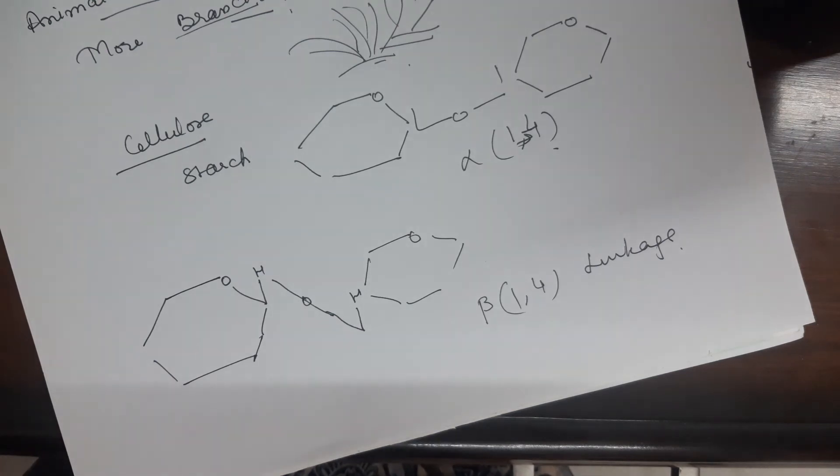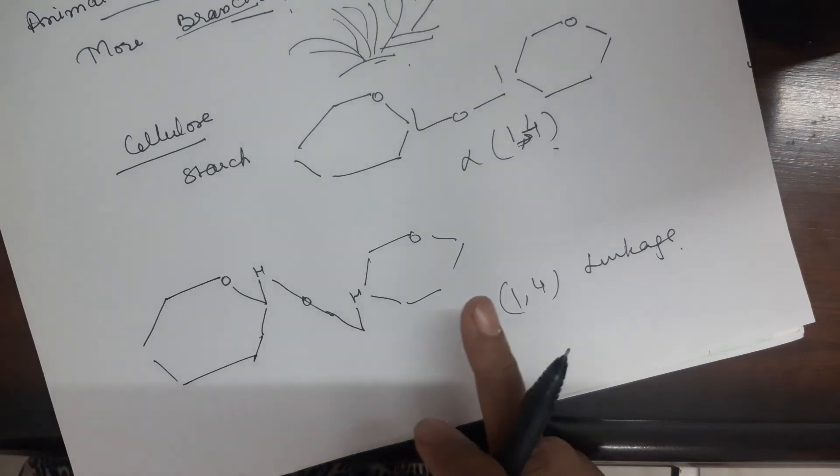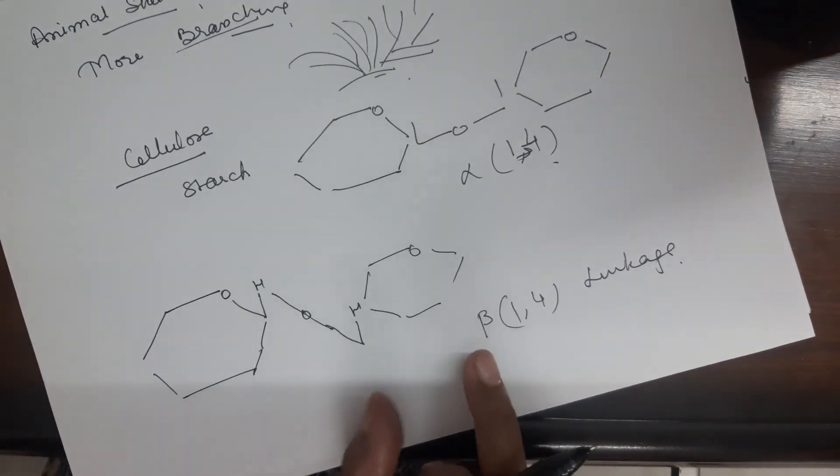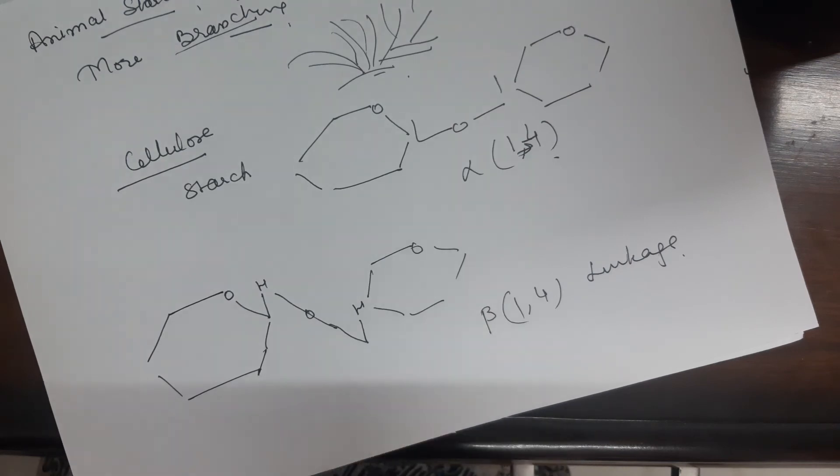Now, sometimes, a question may be asked. Cellulose is also made up of glucose. Starch is also made up of glucose. We can digest starch, but we cannot digest cellulose. Why? Because our enzyme, amylase, can break down the alpha linkage. But it cannot break down the beta linkage. This is the reason that we cannot digest cellulose.